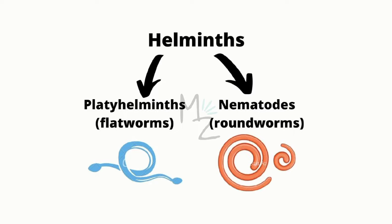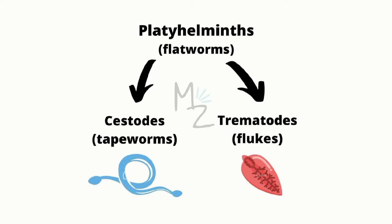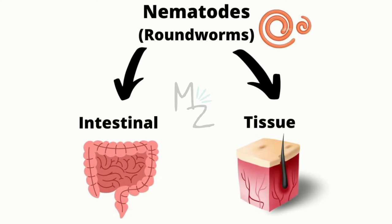Platyhelminthes are further classified into cestodes (tapeworms, e.g., Taenia solium) and trematodes (flukes, e.g., Schistosoma). Nematodes are further classified into intestinal nematodes and tissue nematodes. I have a complete video series on both — browse the channel to find them.